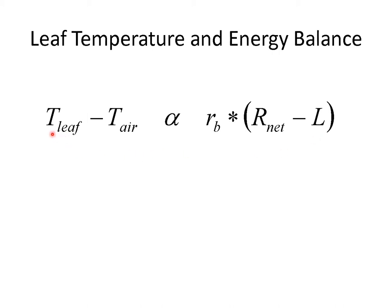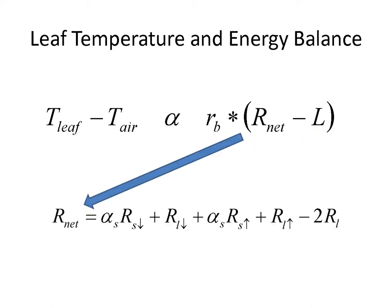One of the main reasons we're interested in studying the energy balance of leaves is to understand how leaf temperature will vary in certain situations. I've expressed leaf temperature as something relative to air temperature, because what we're really interested in is how high above air temperature does leaf temperature get. Leaf minus air temperature is proportional to the boundary layer resistance of the leaf multiplied by the net radiation minus latent heat loss. Net radiation refers to the net amount of radiation absorbed by a leaf.